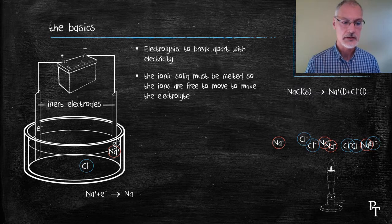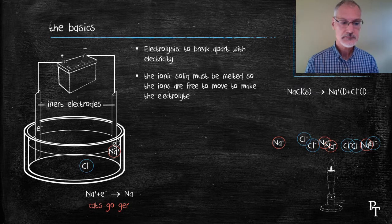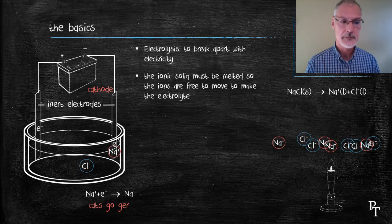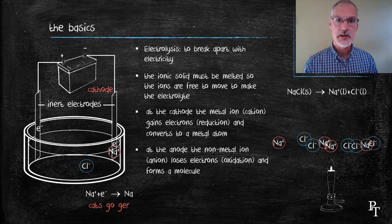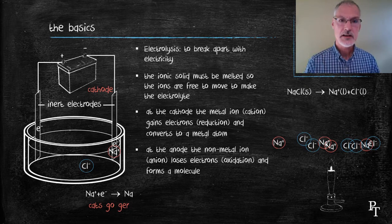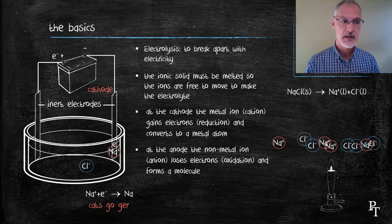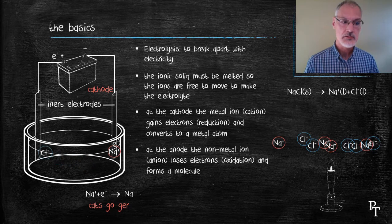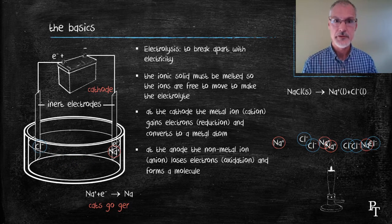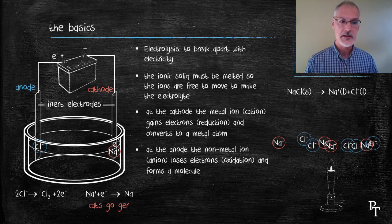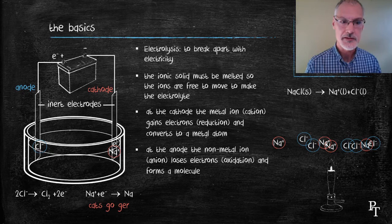And this process is called reduction. You might recall the phrase, Katz-Gauger, reduction by definition always takes place at the cathode. Similarly, on the other side, electrons are drawn up the wire towards the positive terminal. There, chlorine is now drawn to the positive charge that develops and deposits its electron at that electrode, converting itself into the chlorine molecule at the anode.